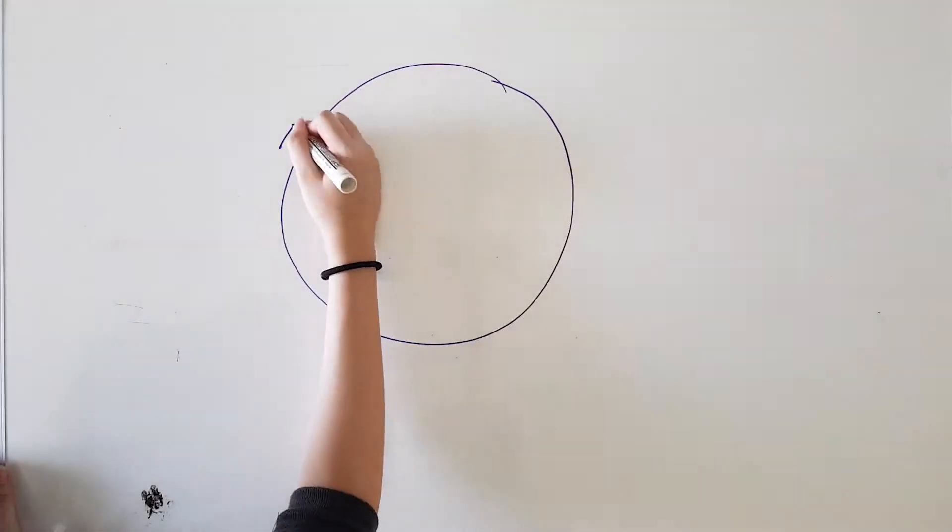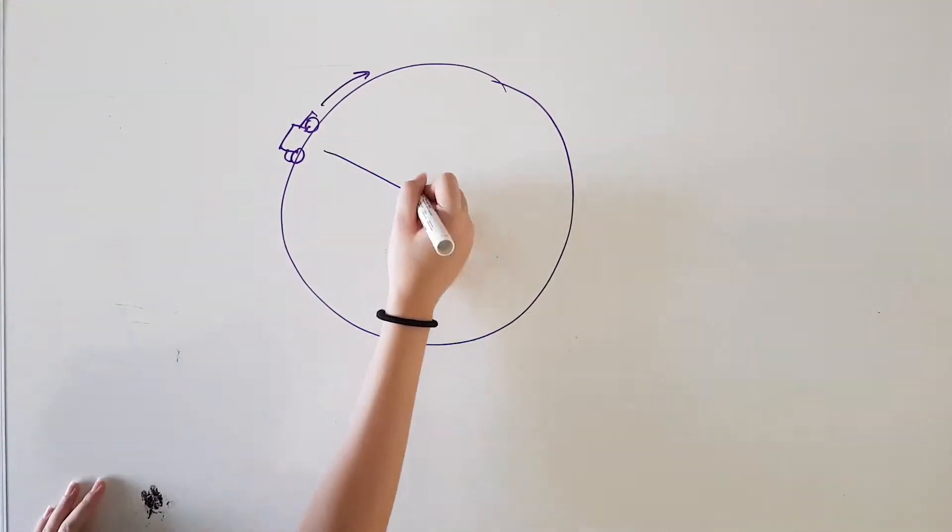In uniform circular motion, the direction of the velocity changes constantly, so there is always an associated acceleration, even though the speed might be constant.